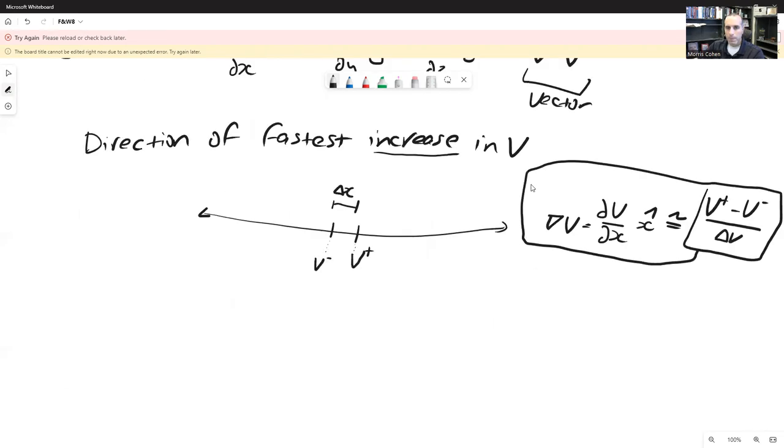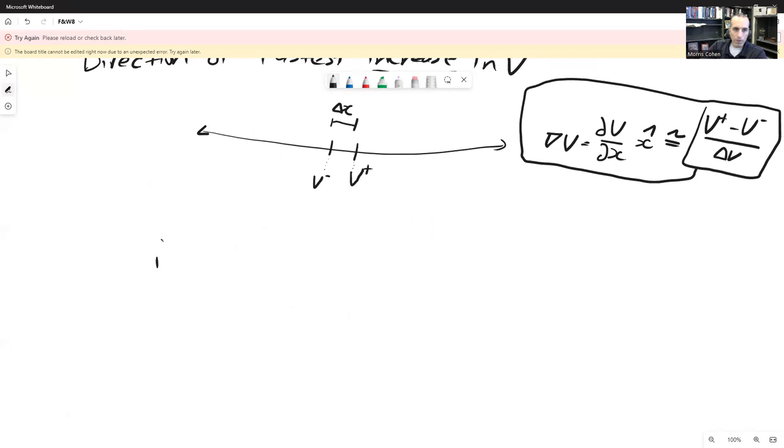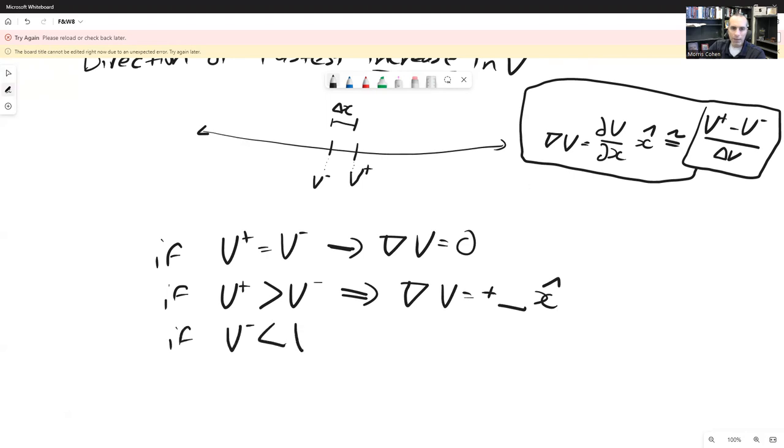All right, so here's a delta x right here, and from this relationship and the connection to the gradient in one dimension, you can sort of see that if v positive equals v negative, that implies that the gradient of v equals zero. If v positive is greater than v negative, that implies that the gradient of v equals some positive number in the x direction. And if v positive is less than v negative, that implies that the gradient of v is some negative number in the x direction.